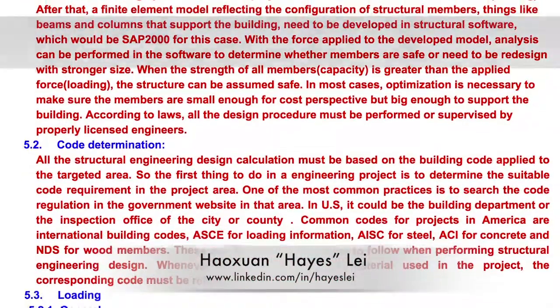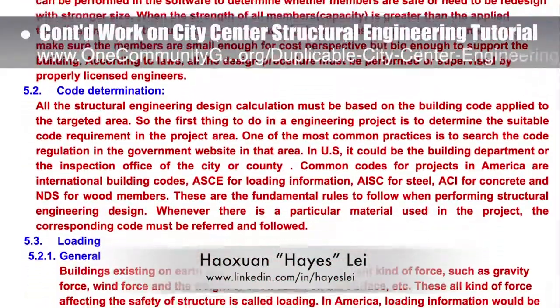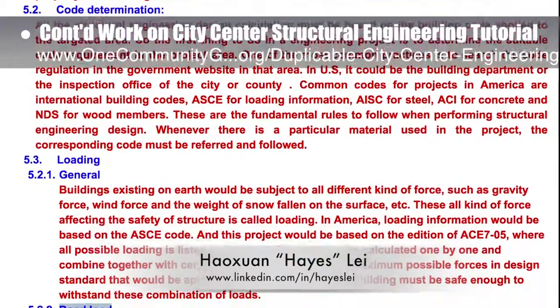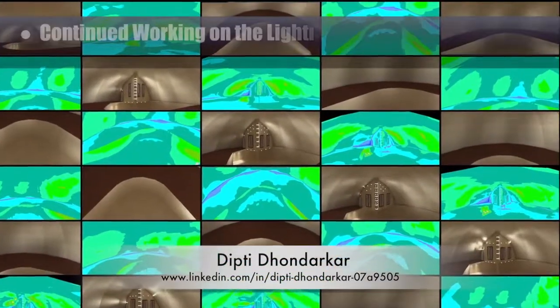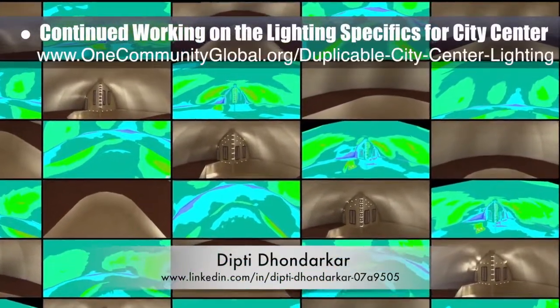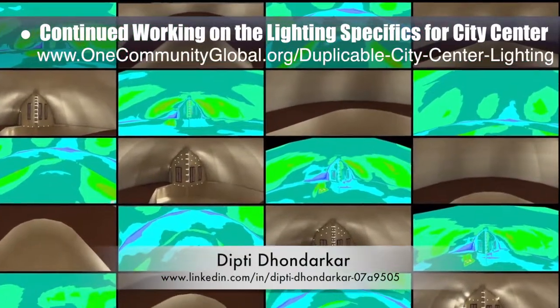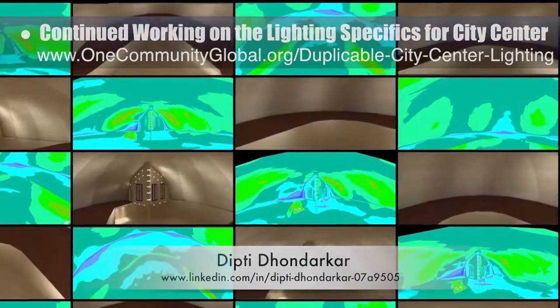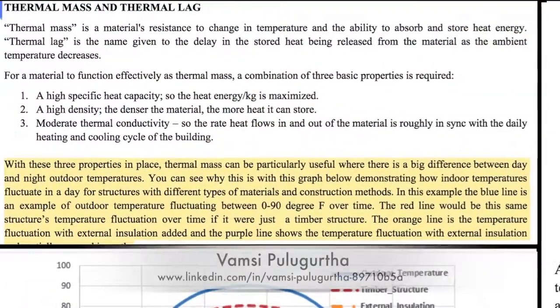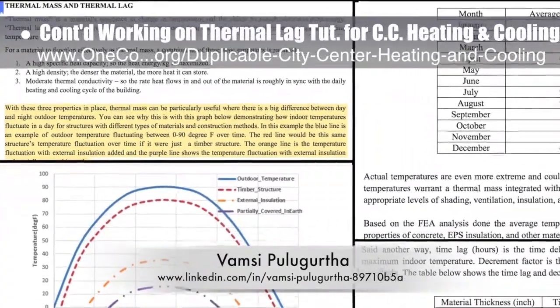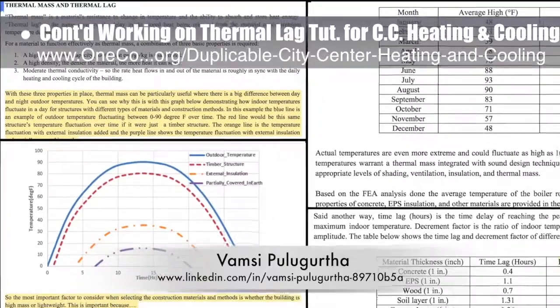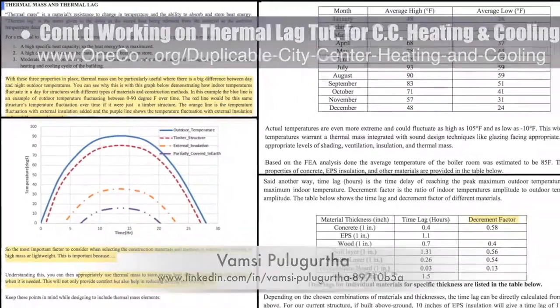Hayes Lee, structural engineer, continued work on the city center structural engineering tutorial — shown here is some of his second week of work writing the content. Dipty Dandaker, electrical engineer, continued her 43rd week of work on the lighting specifics for the city center, with this week's focus on three more placement and layout tests for the smaller lights within the social dome. Vomzi Puller-Gertha, mechanical engineer, completed another round of additions and revisions for the thermal leg report and tutorial for the city center heating and cooling.